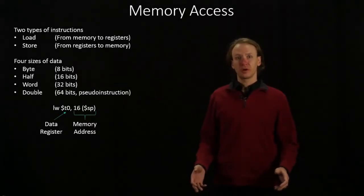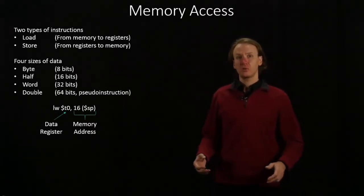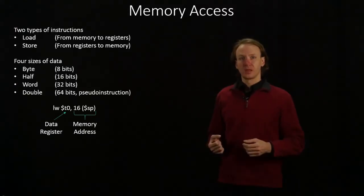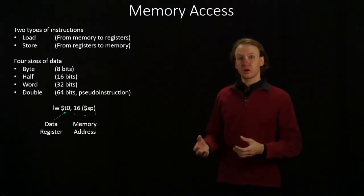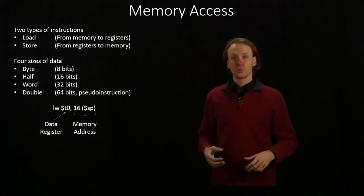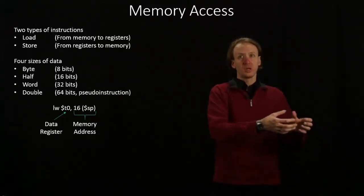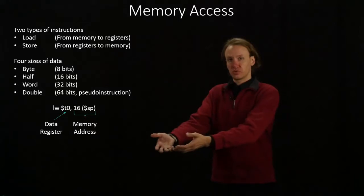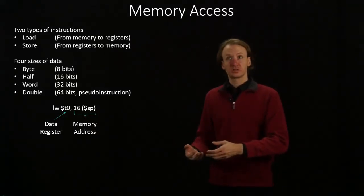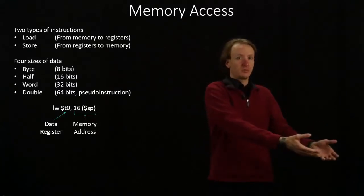Now that we know what the structure of our memory looks like, we're going to look at how we can actually access the memory. In the MIPS architecture, we have two types of instructions. We have load instructions, which take data out of memory and copy it into a register. We have store instructions, which take some data out of a register and copy it into memory.